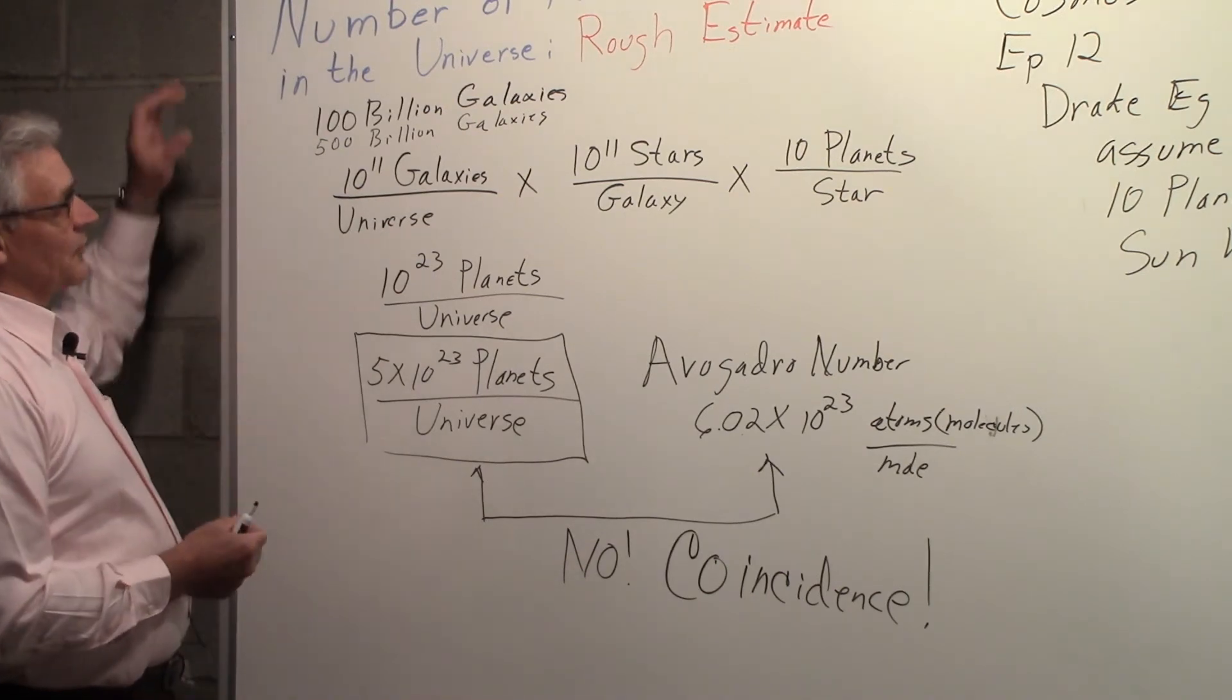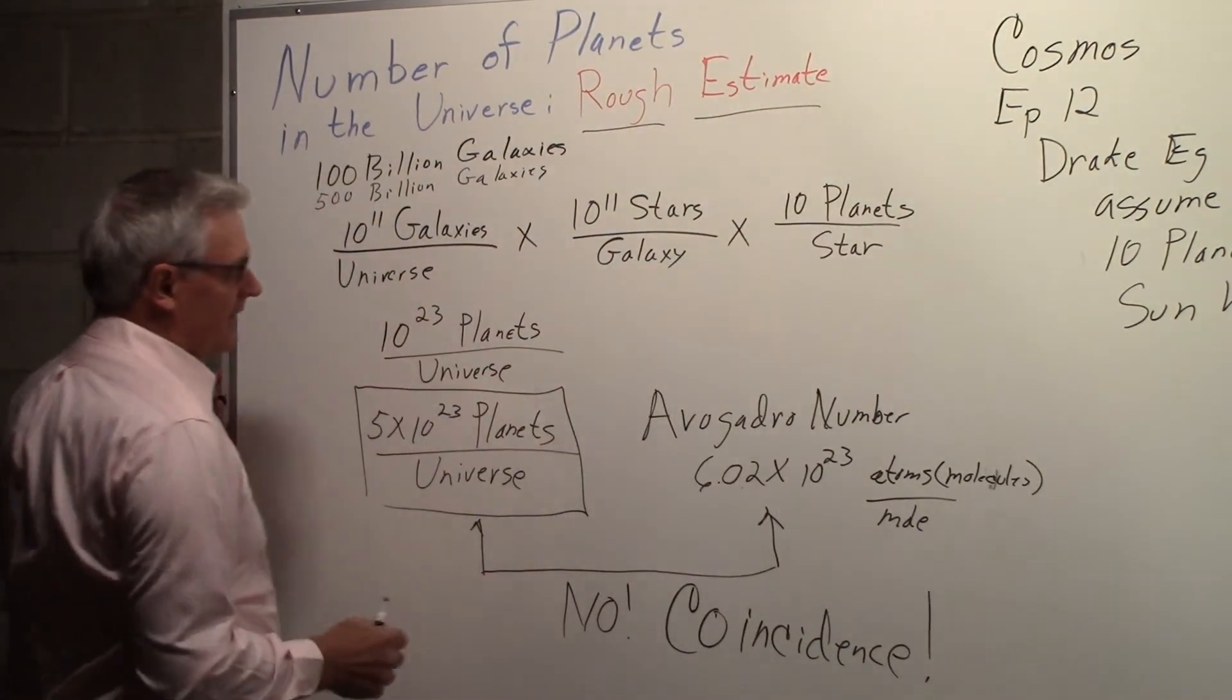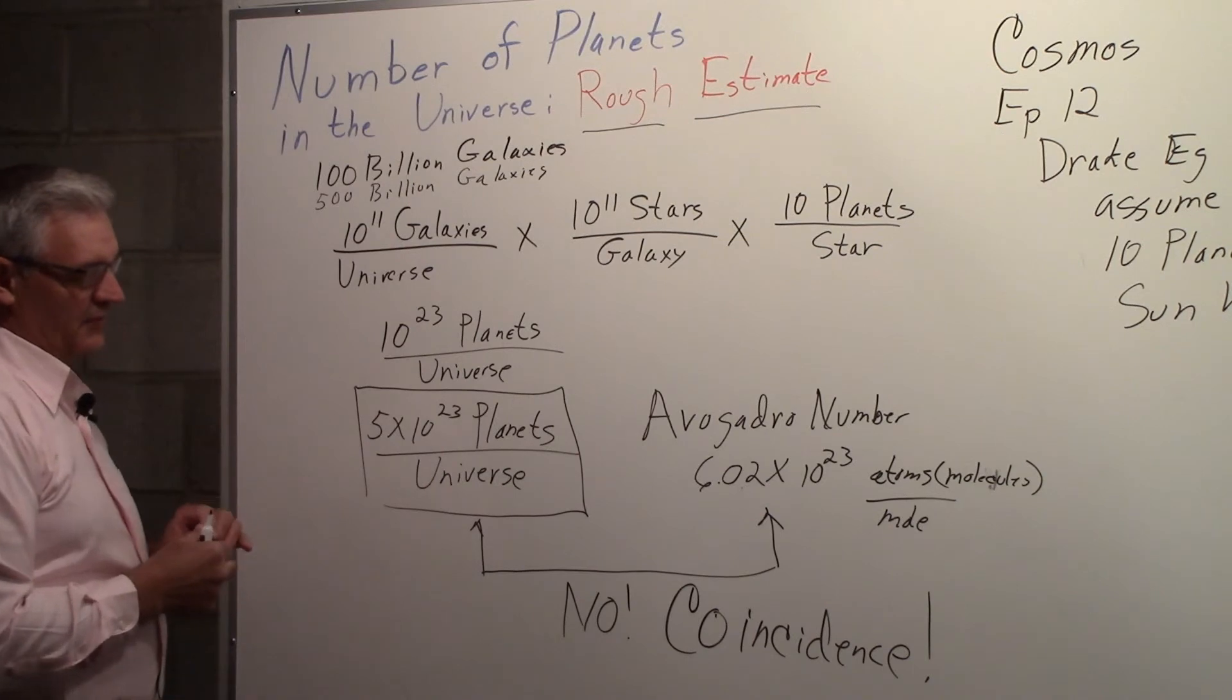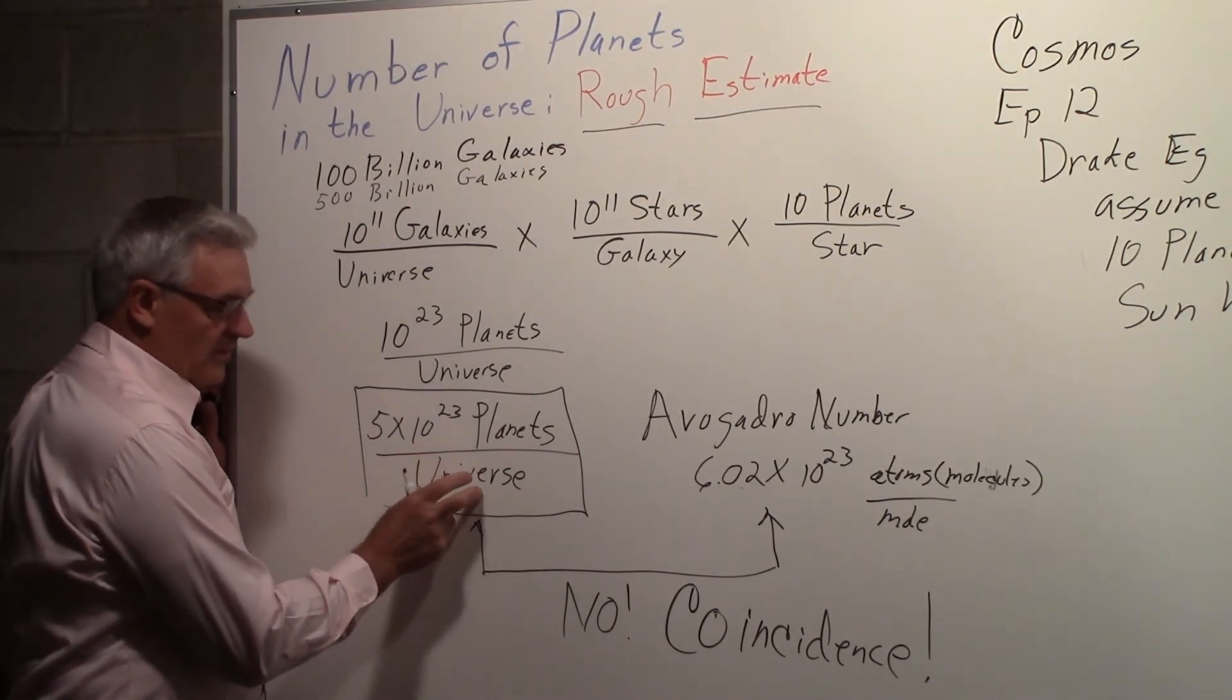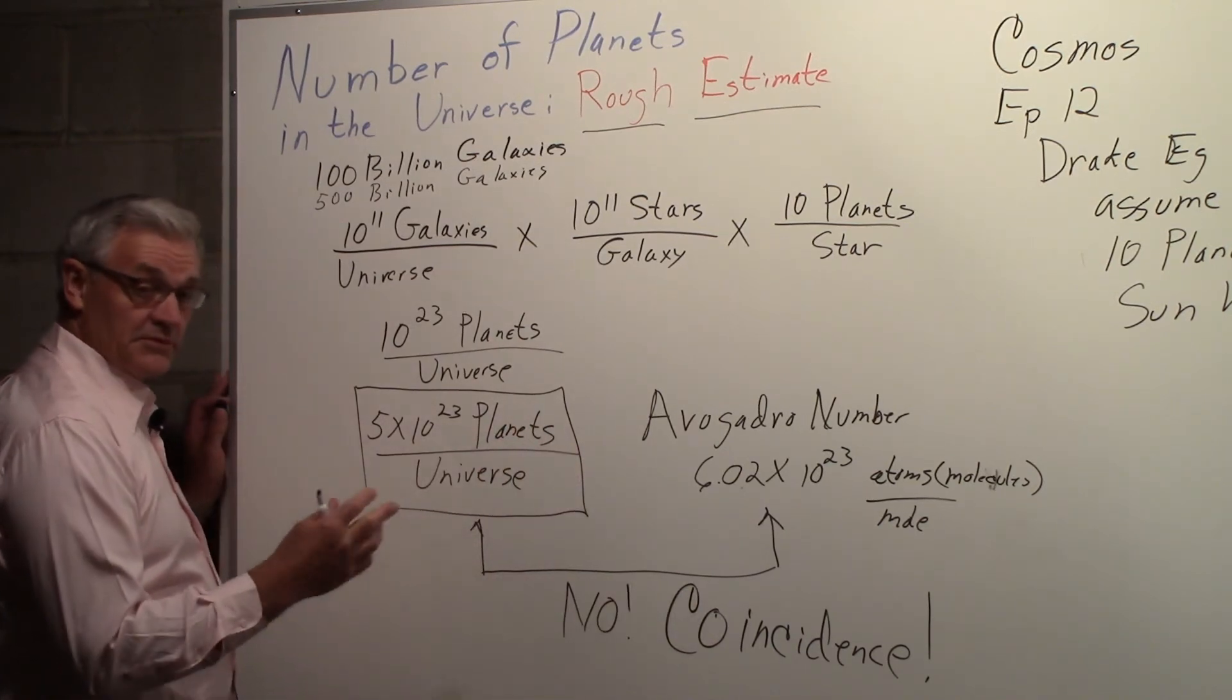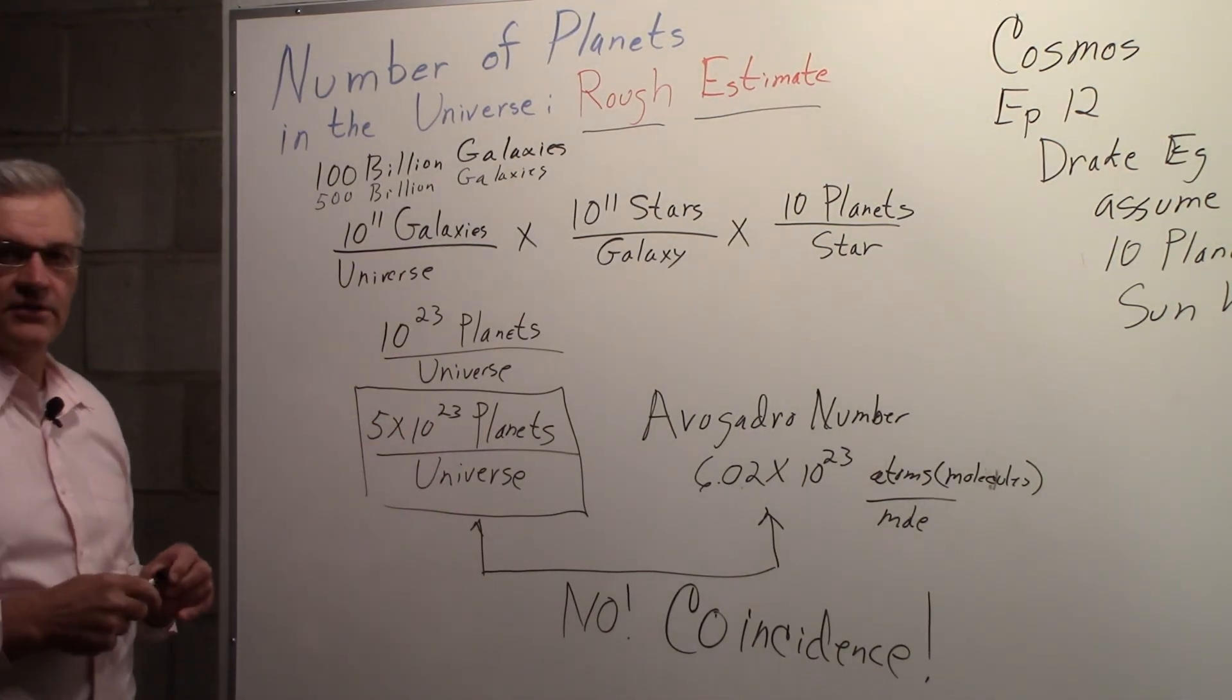So that's the story on the number of planets in the universe. Again, it's a rough estimate, and I imagine that numbers will change as time goes on. But it is interesting that the number comes out very close to Avogadro's number. And so Avogadro's number is a nice way, which almost everybody knows, to remember how many planets there might be in the universe.